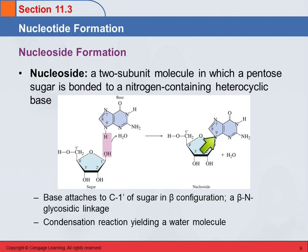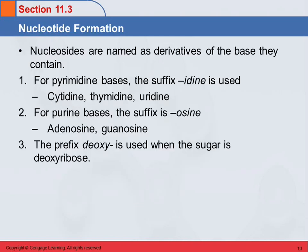The nucleosides have names — this is the sugar and the base together. For the pyrimidine bases, you change the suffix to '-idine,' and so you have cytidine, thymidine, and uridine. So uracil is the base, but when it bonds with the ribose it becomes uridine. For the purine bases, the ending is '-osine,' and so we have adenosine and guanosine.